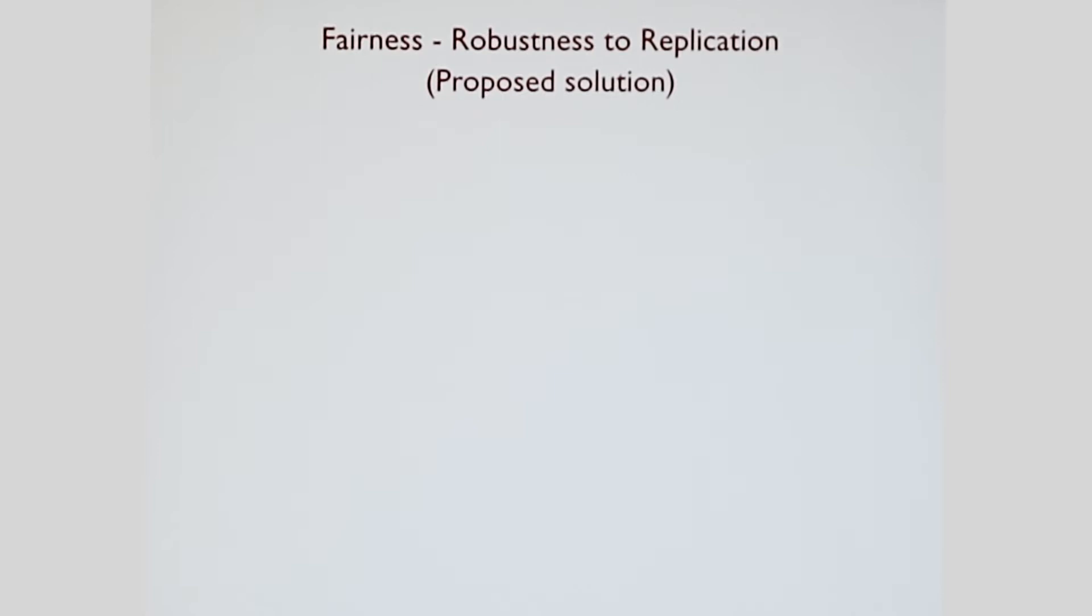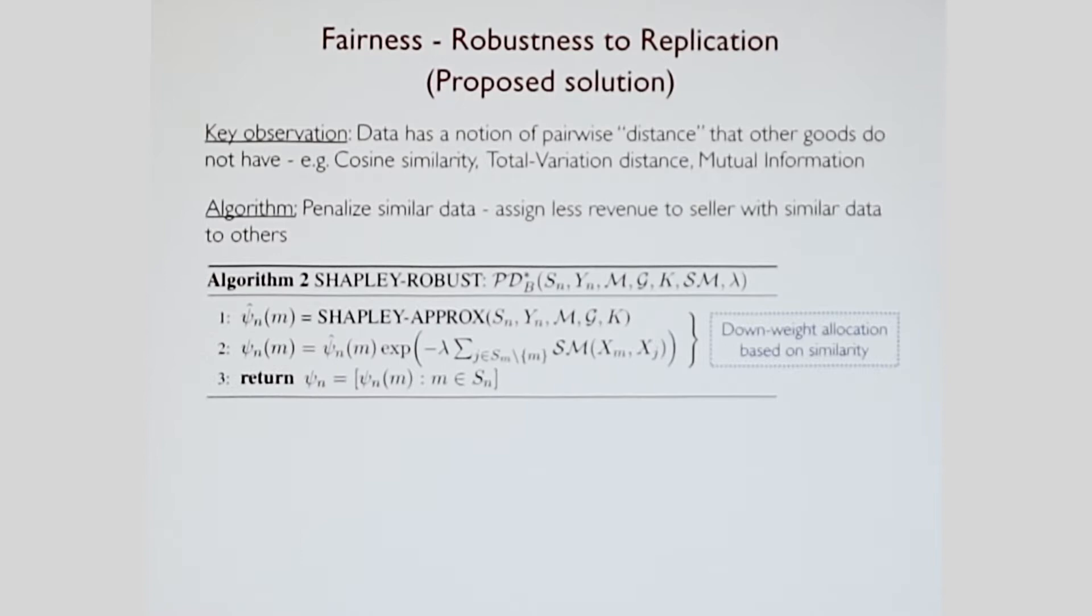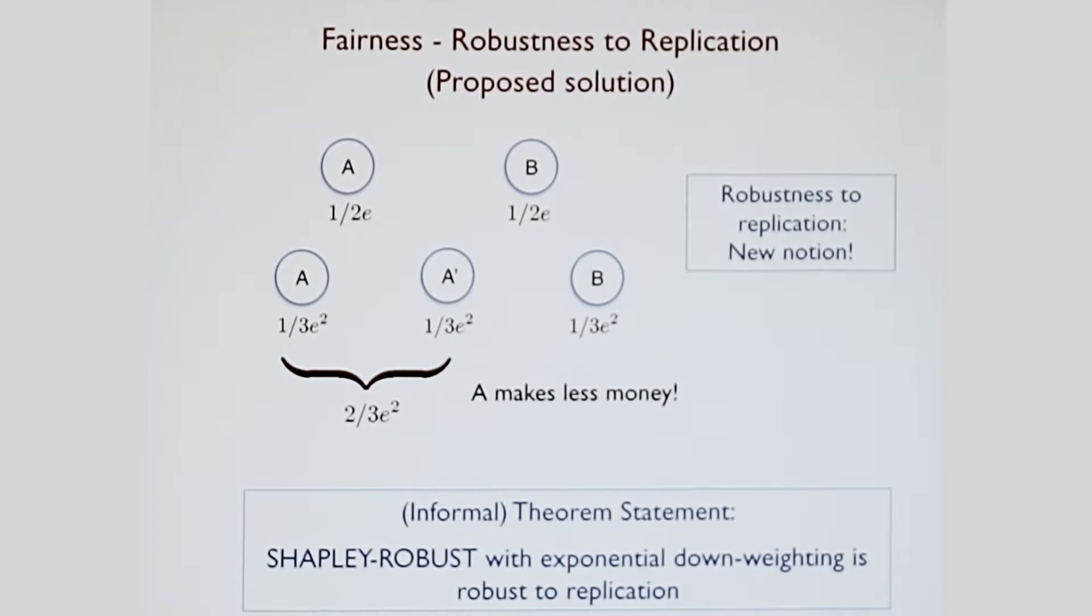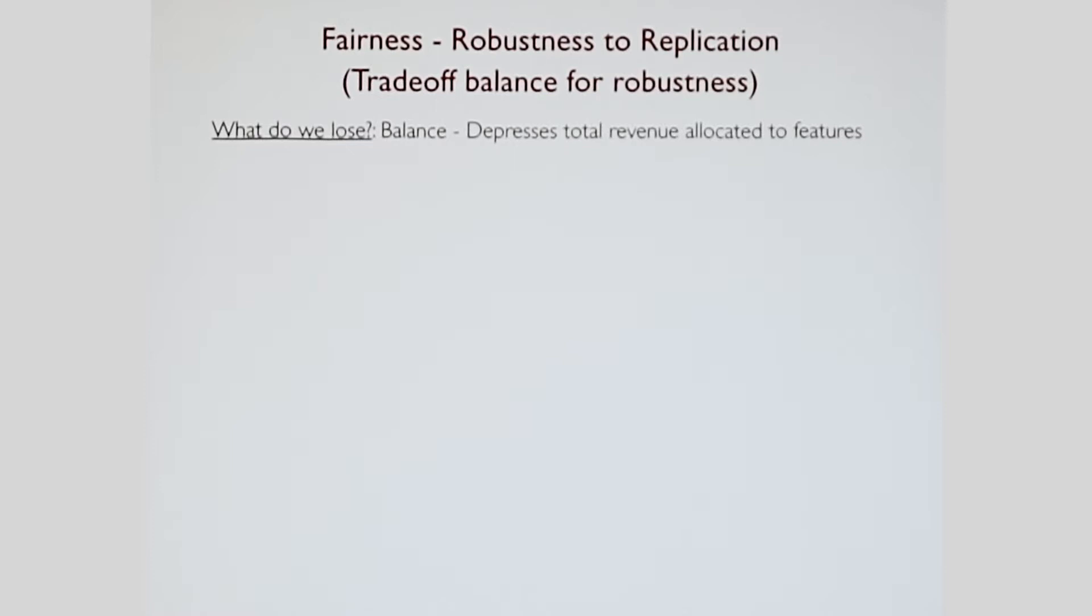Well, again, the features about data make it come to the rescue. Data has a nice notion of pairwise distance. For example, you could compute the cosine similarity, or the total variation distance, or the mutual information if you're selling distributions. All I'm saying to do is a very simple fix. You run the Shapley approximate, and then you downweight each feature based on how similar it is to every other feature. If you downweight just the right amount, particularly if you exponentially downweight it, you can provably show that it's robust to replication. Are we good now? Well, unfortunately, still not. The reason is we have lost balance. All the revenue is no longer being allocated to all the features. Is it possible to have both balance and replication robustness? Unfortunately, no. You can create very easy counter examples to show that it's not possible.